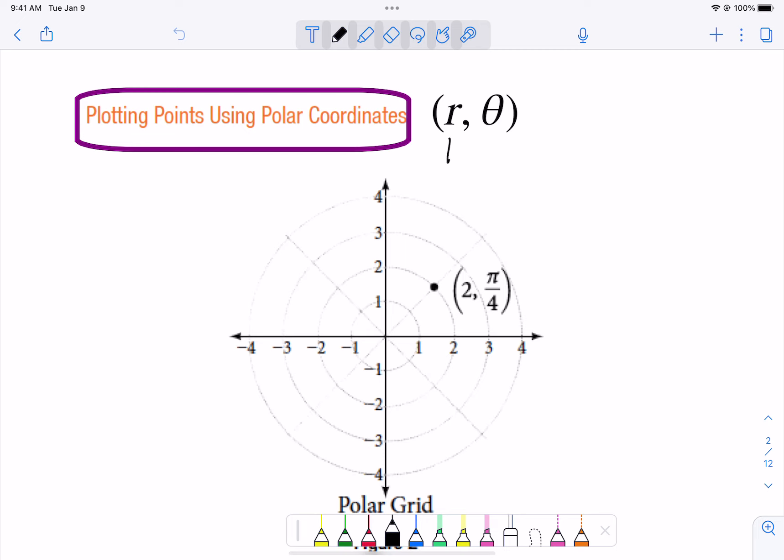Think of this as radius and this is the angle measure. It is very customary to write that point in radians, so you won't see it in degrees as often. So what do you do when you graph it?